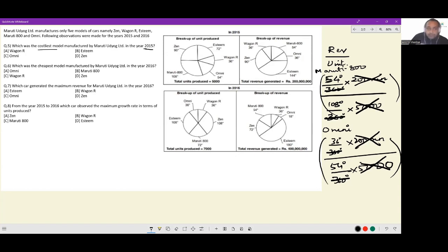So with that in mind, let us check Wagener. Wagener here is 36, here is 36, so I get 1. For Esteem, here is 144, here is 72, so I get 2. For Omni, here is 36, here is 54, so I get 2 by 3. And for Zen, here is 90, here is 90, so I get 1. Simple comparison tells me Esteem is the costliest model manufactured by Maruti Udyog Ltd in the year 2015.